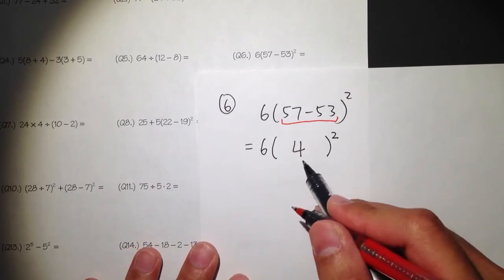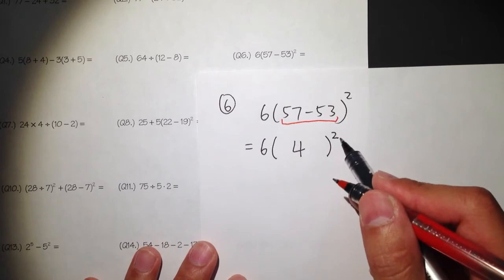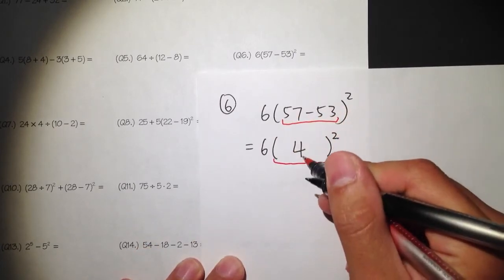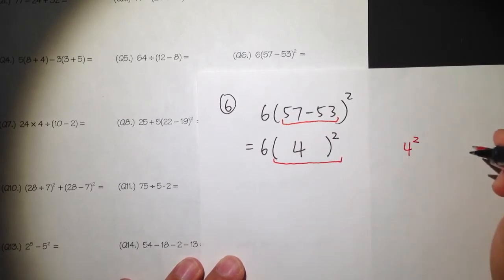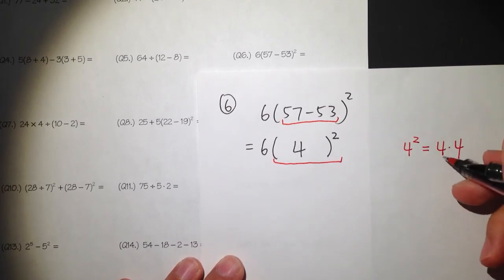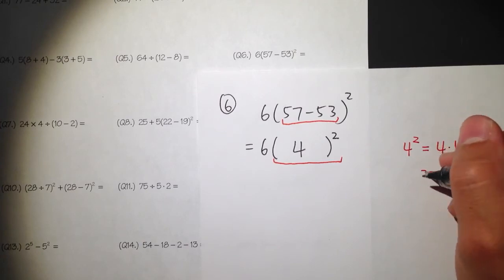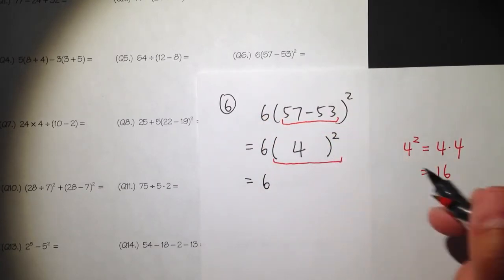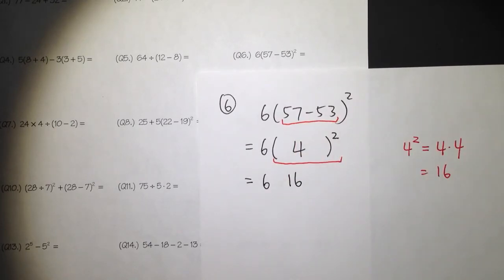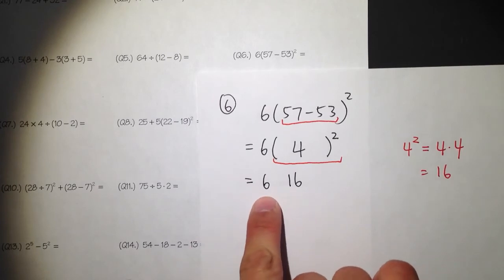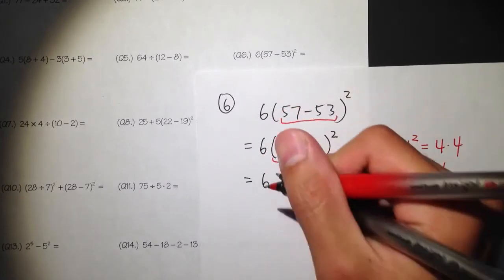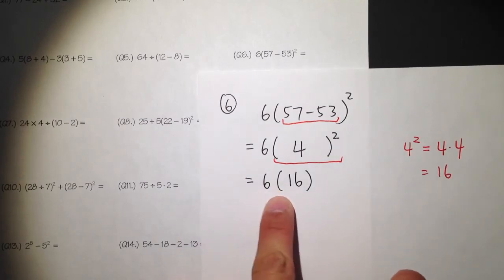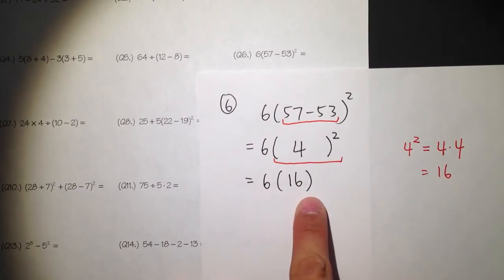We now have 6 parentheses 4 parentheses 2 — the little 2 is the exponent. What we need to do now is carry out 4 to the second power. So 4 to the second power means 4 times 4 — you write down two 4s and multiply them together, and that's equal to 16. We still have the 6 in the front, and 4 to the second power is 16. But if I just put 6 and 16 together it looks like 616 — what's missing is the parentheses. When we have a number, parentheses, and a number, the parentheses means to multiply.